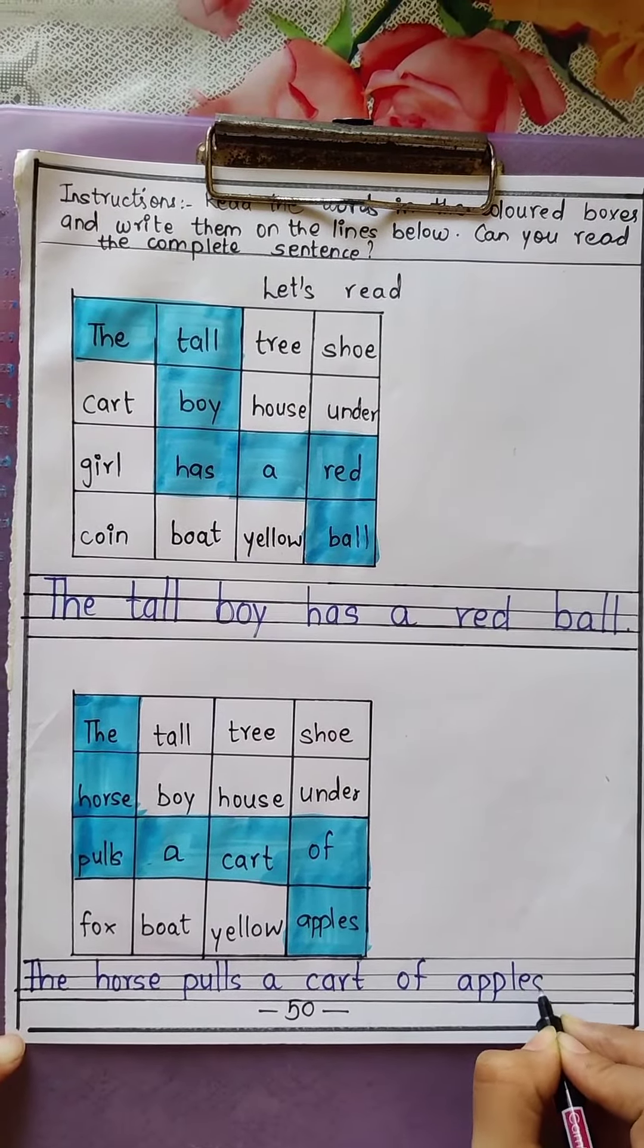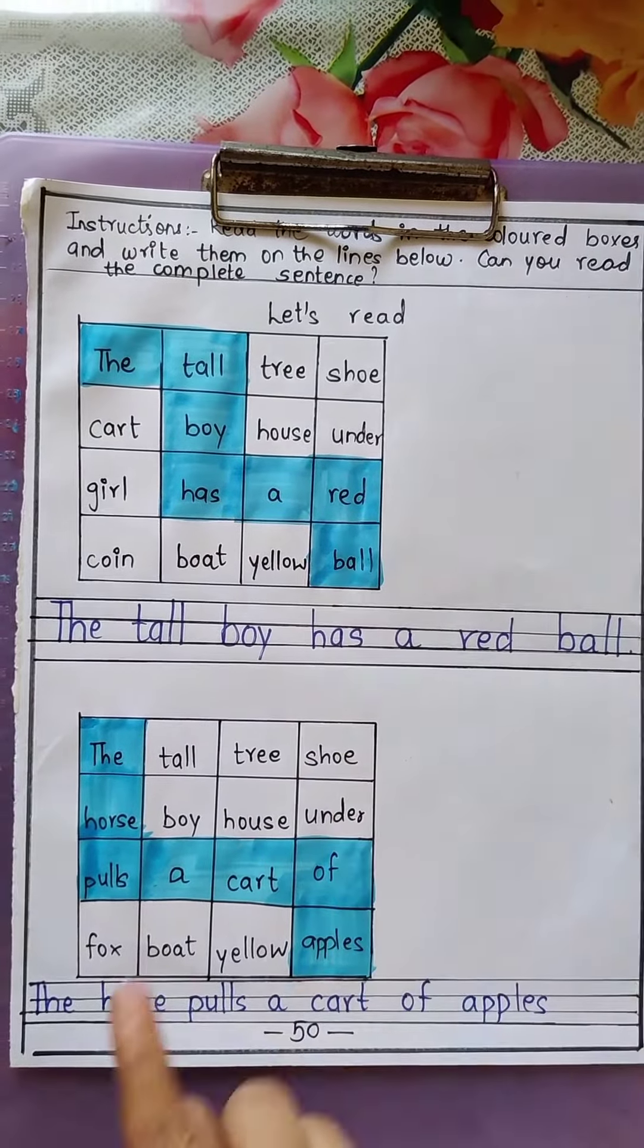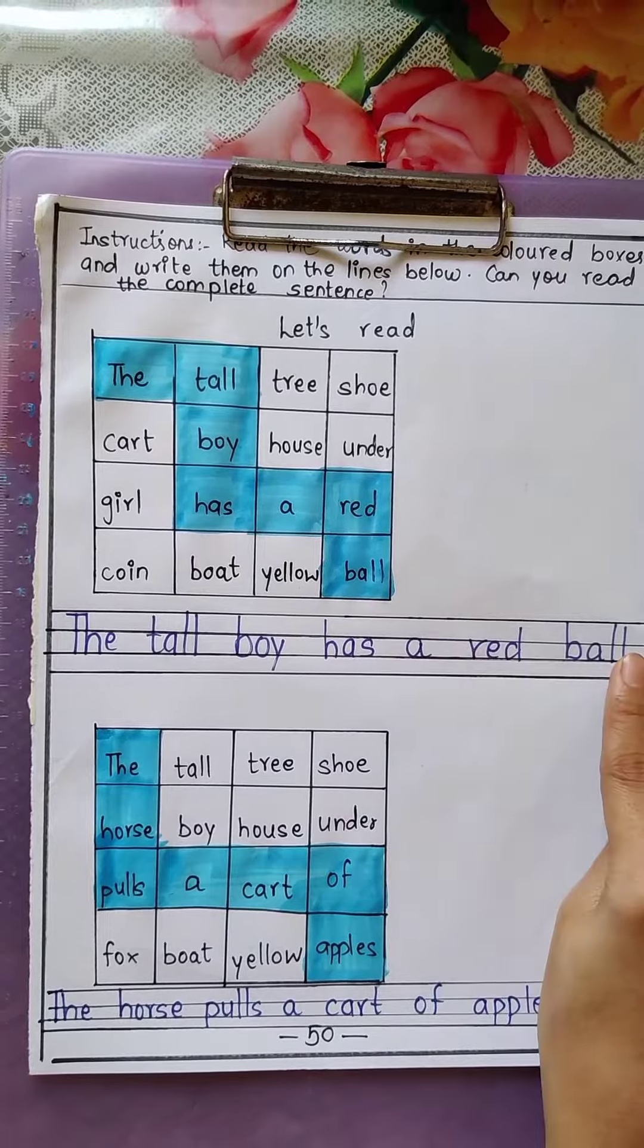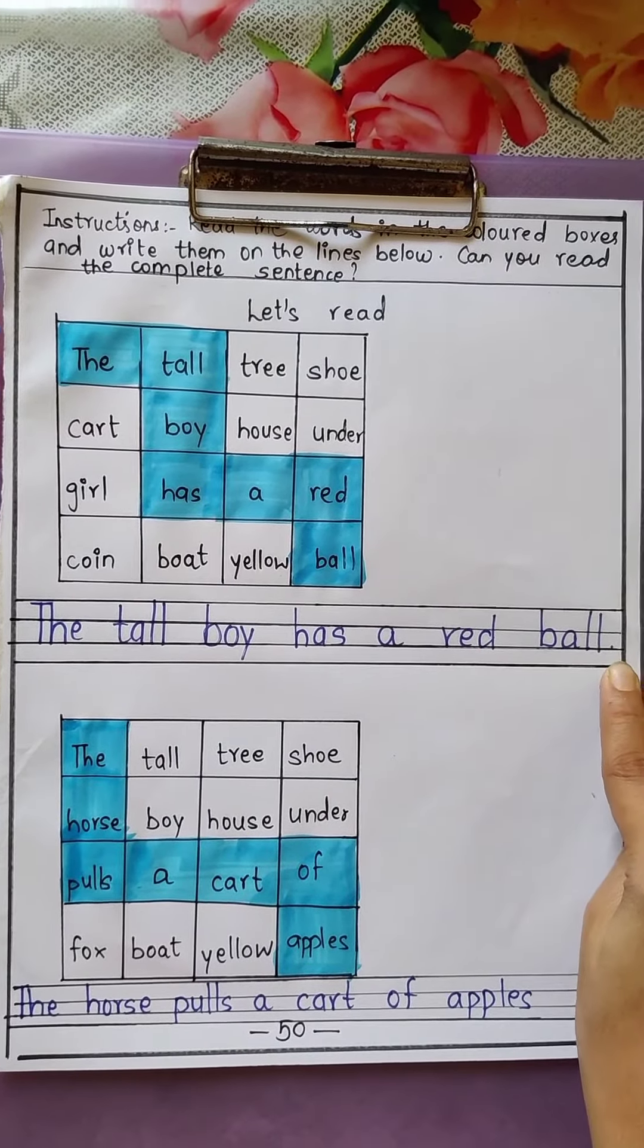Like this, you have to read the words which are in the colored boxes and write them on the lines given. Write the sentence on these given lines.